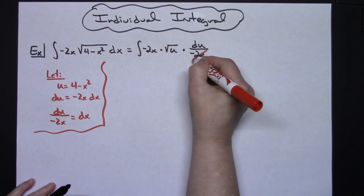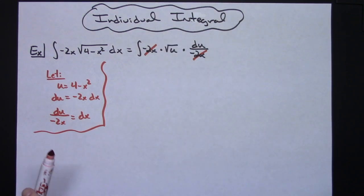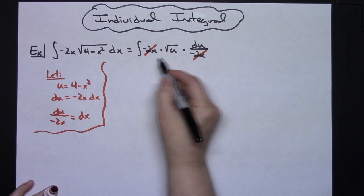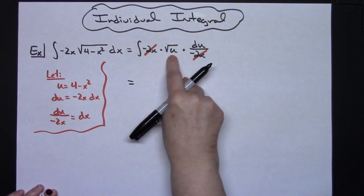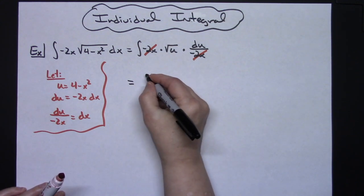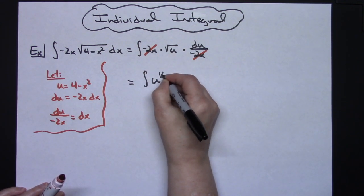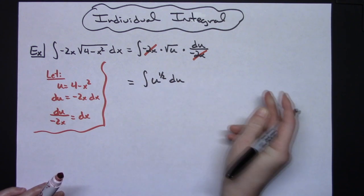At this point it's going to let me cross out those negative 2x's really nice. And then when I rewrite this integral I'm going to clean it up a little bit. I'm going to rewrite this into exponential form and get rid of that radical so I'll have the integral of u to the 1 half du. Everything is in terms of u now.